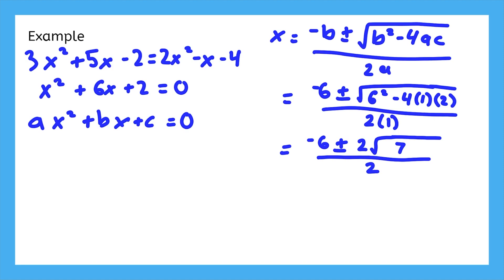Since the denominator is 2, we can go ahead and divide the two terms on top by 2. Negative 6 divided by 2 is negative 3, and 2 square root of 7 divided by 2 is just the square root of 7, because the 2 divided by 2 cancels out.